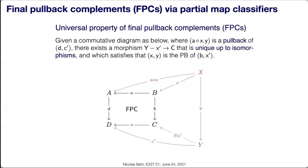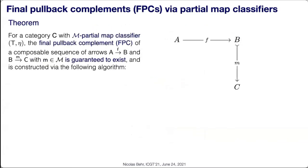A final pullback complement is a special commutative square that is a pullback with a universal property: whenever you have a morphism from X into A such that the whole thing commutes and the outer square is a pullback, there exists a dashed morphism such that you get two pullback squares, with a certain uniqueness up to isomorphism of the object C.